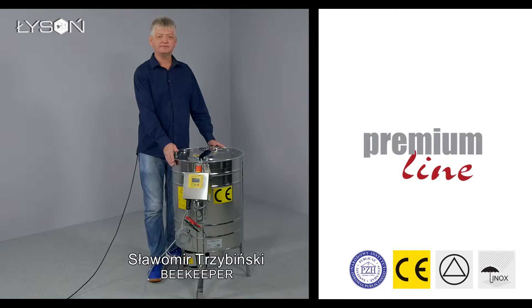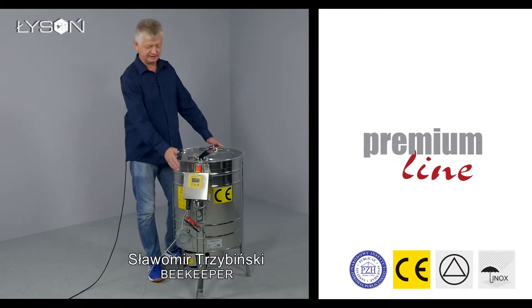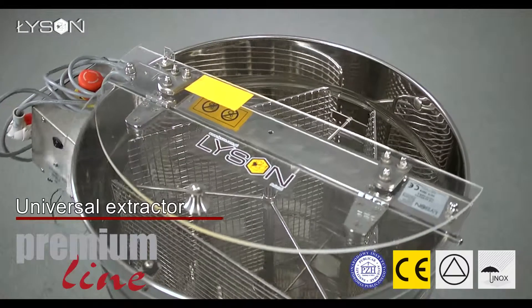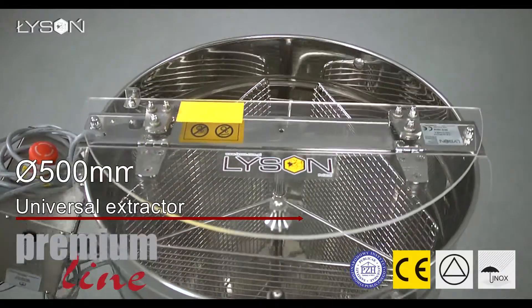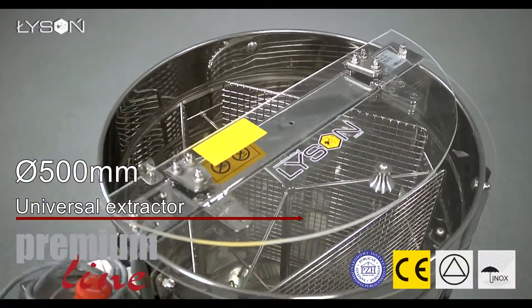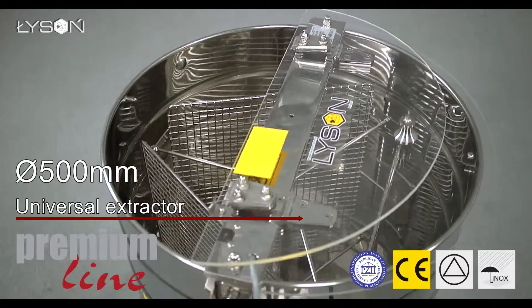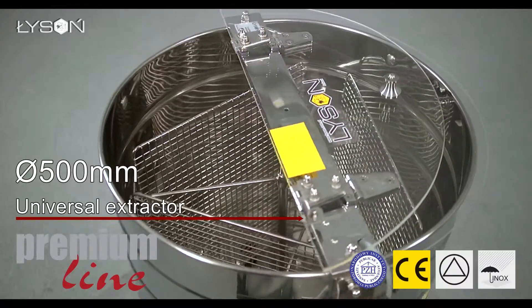3-Frame Tangential Premium Line Honey Extractor with electric drive system. A universal extractor so the basket can fit 3 frames of any standard, from the smallest superframes to the largest nest frames, including Dadent type or any other.